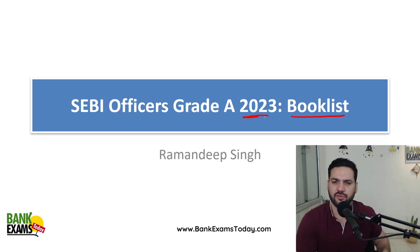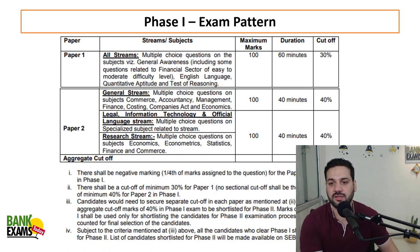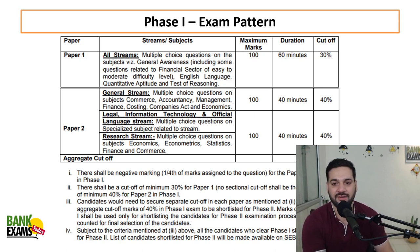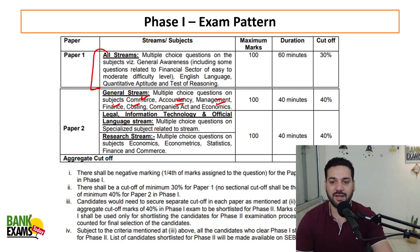Book list for both phases, all the papers I am going to discuss today. So this is the exam pattern students. There is general awareness, English language, quantitative aptitude and reasoning ability in Paper 1, and then there is commerce, accounting, management, finance, costing, companies act and economics in Paper 2. I am discussing the general stream only.